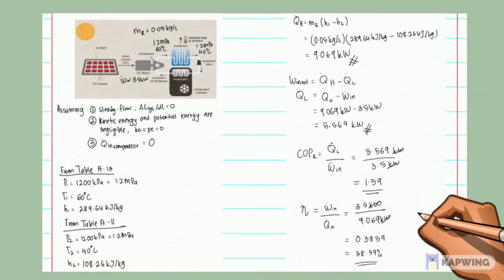We assume steady flow, and that kinetic and potential energy are negligible, with heat loss in the compressor equal to zero. From Table A13, we can find the first enthalpy, and from Table A11, we can find the second enthalpy. The first enthalpy corresponds to the superheated vapor state, while the second corresponds to the saturated liquid state.